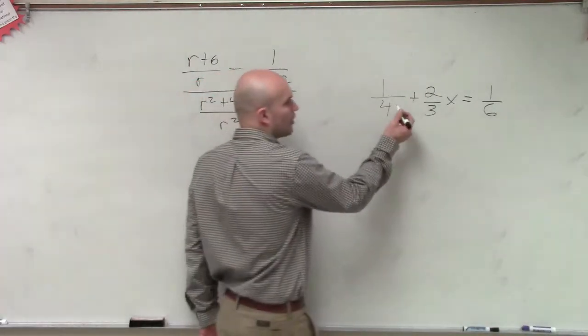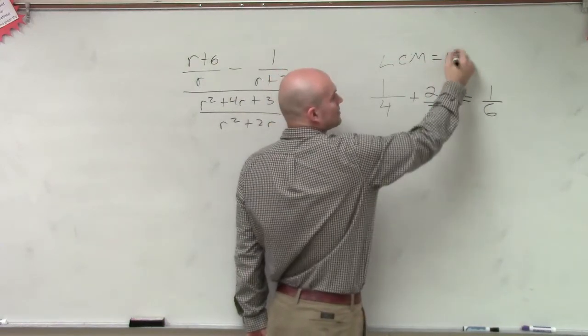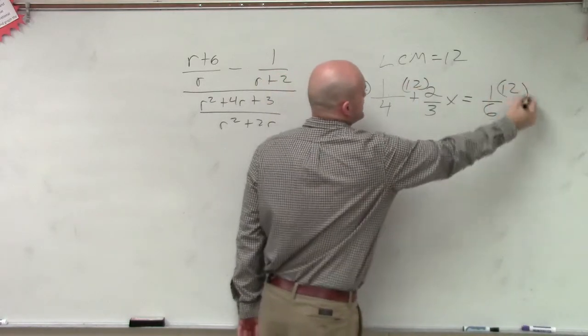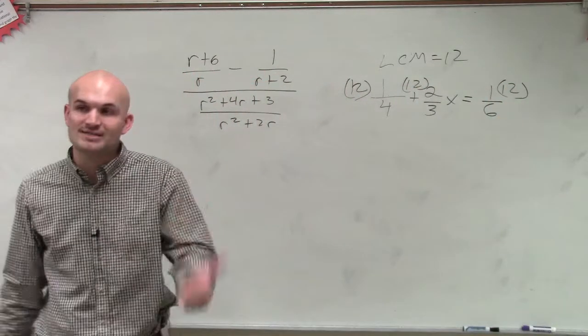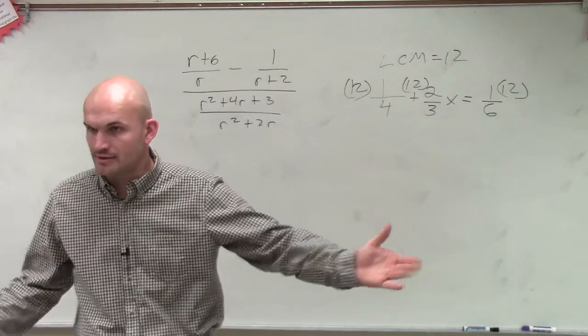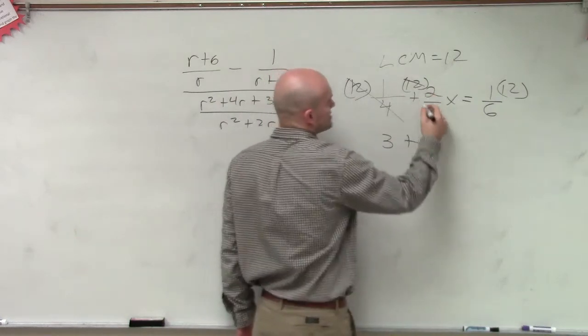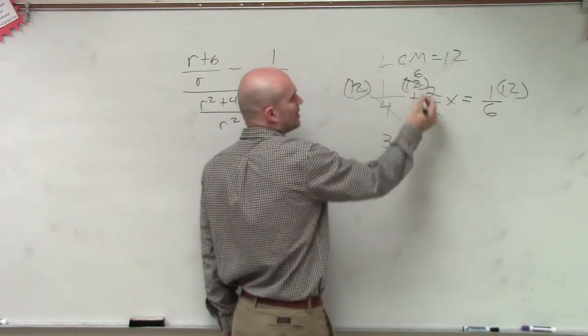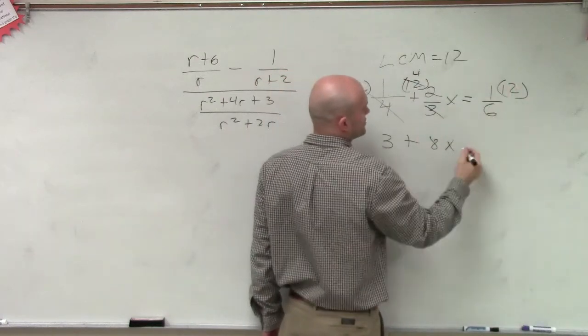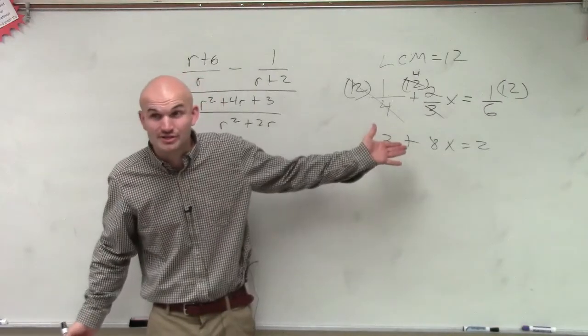And what you determine for all your denominators, the LCM is equal to 12. So what we do is we multiply everything by 12. Because as long as you do whatever you do to one side of the equation, you do to the other side of the equation, you still have equivalent equations, right? So when you multiply by 12, you get 3 plus this goes down to 4. 4 times 2 is 8x, and this reduces down to 2. Now you have an equation without fractions. Is that a lot easier to solve? Yes.